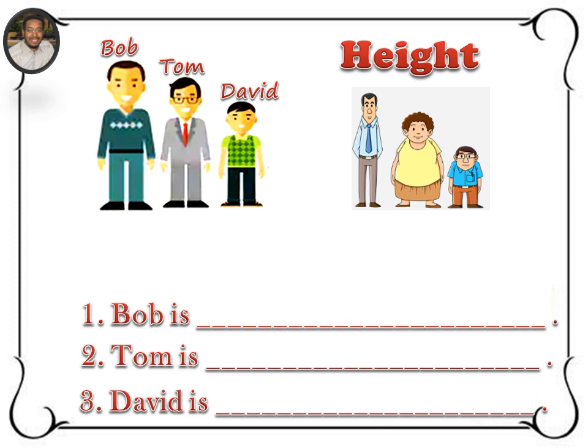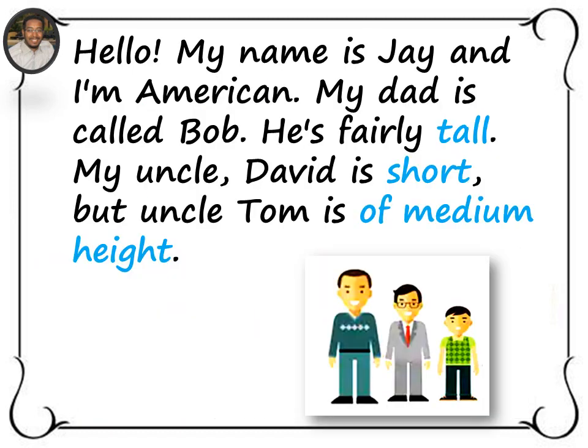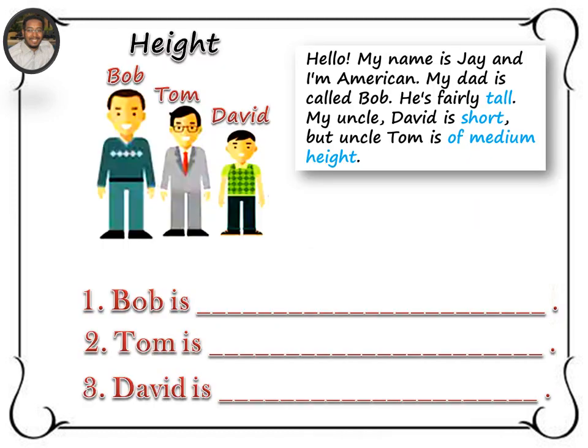Now I want you to read the following text and complete these sentences. Hello, my name is Jay and I'm American. My dad is called Bob. He's fairly tall. My uncle David is short but uncle Tom is of medium height. Now pause the video and take one minute to complete the sentences. Only one minute. Off you go.